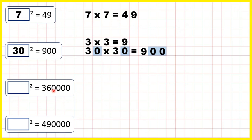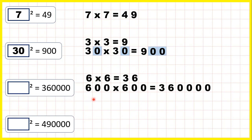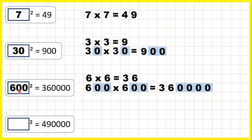Now we need to find the square root of 360,000. 36 is a square number — 6 times 6 is 36 — which means that 600 times 600 is 360,000, because 6 times 6 is 36, then if we have a total of 4 end zeros in our multiplication question, we need 4 end zeros in our answer. So because 600 times 600 is 360,000, we can say that 600 squared is 360,000.